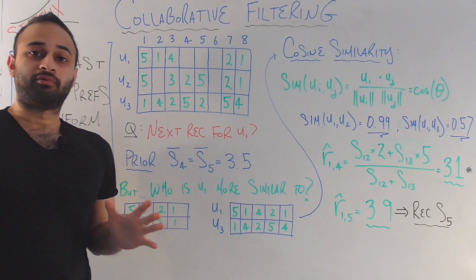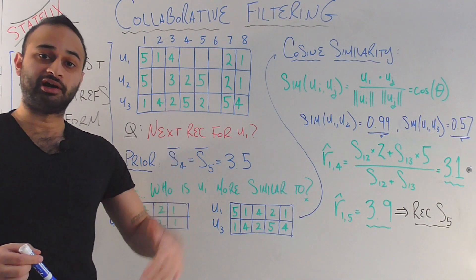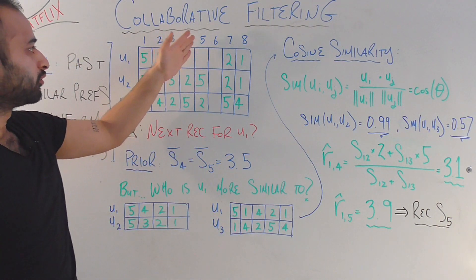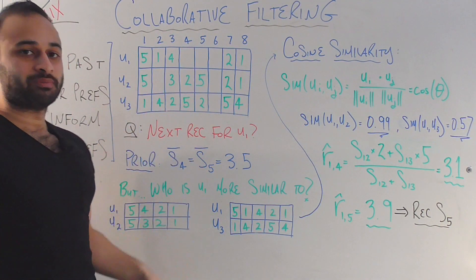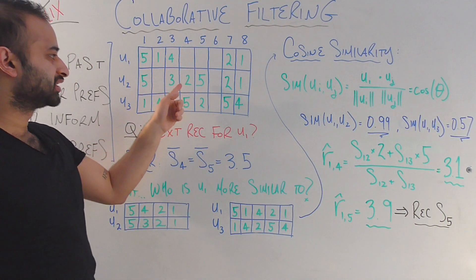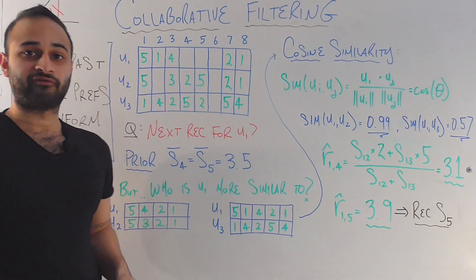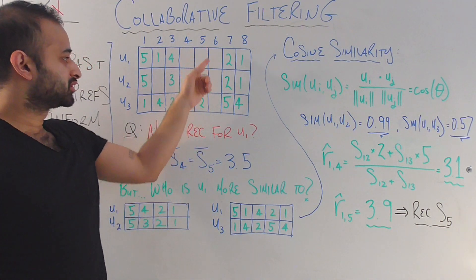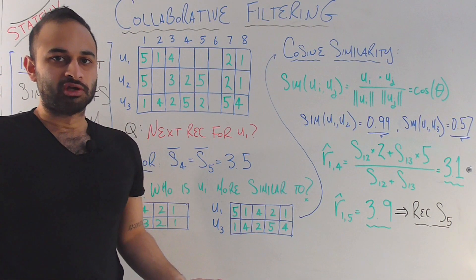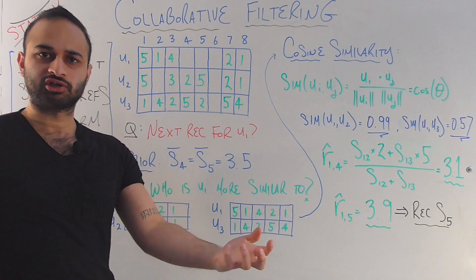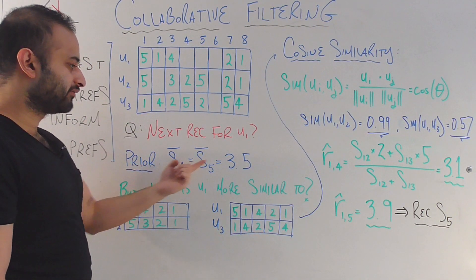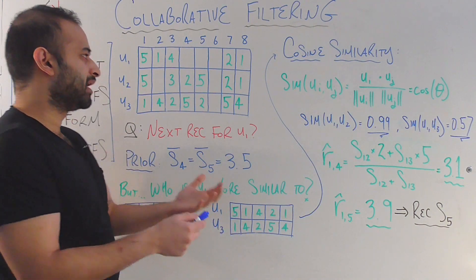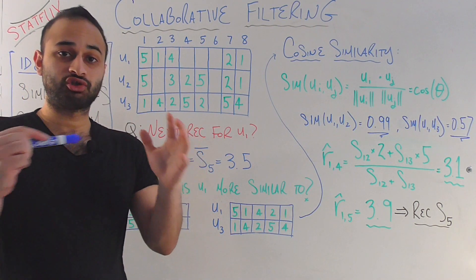If we were naive and didn't account for similarities between users, we might just take a simple average of the ratings for the unrated shows from the other users. For show four, user two gave it a two and user three gave it a five — average is 3.5. We get the same number for show five. For show six we have no data at all. So without considering user similarity, both shows have an average rating of 3.5 and we still wouldn't know which to recommend to U1.